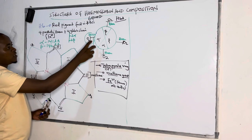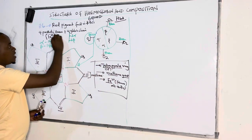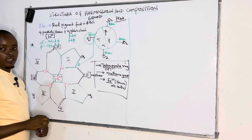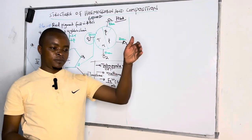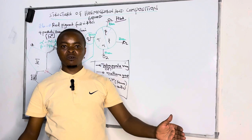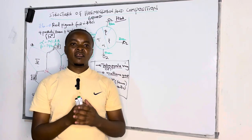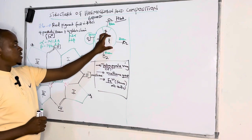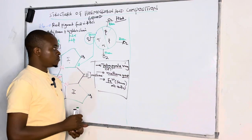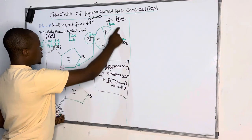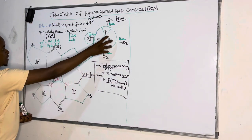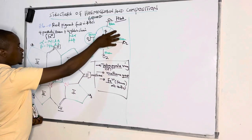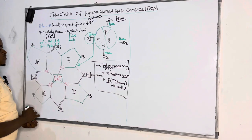We have seen that the structure of globin is made up of a long polypeptide chain of amino acids, whereby the alpha chain has 141 and the beta chain has 146 amino acids. When four globin chains are joined with the four prosthetic heme groups, we form hemoglobin. In the diagram, this enlarged view shows the heme structure, while the full hemoglobin structure shows the globin chains with heme molecules attached.